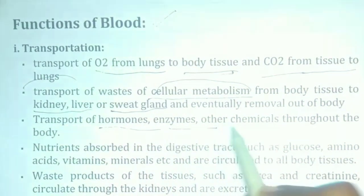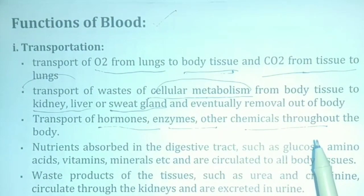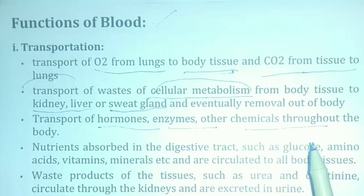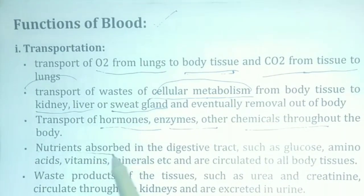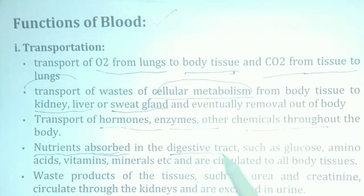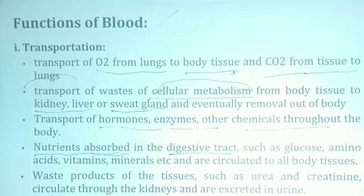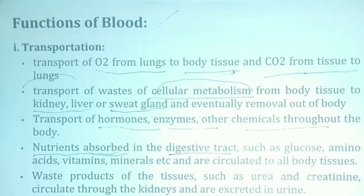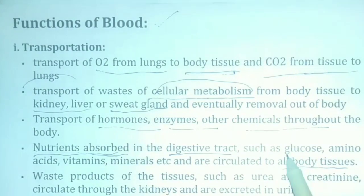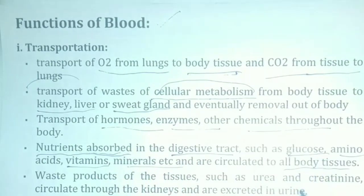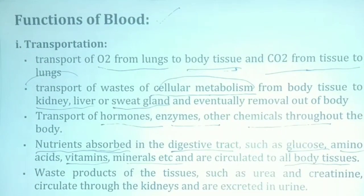Blood transports hormones, enzymes, and other chemical substances in the body. When you absorb nutrition, blood supplies glucose, amino acids, vitamins, and minerals to blood, tissue, and circulation.